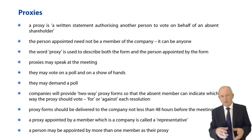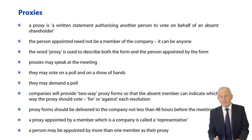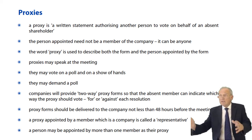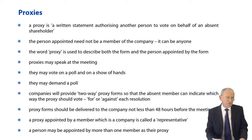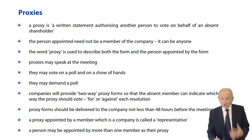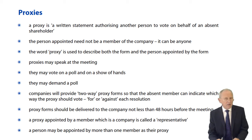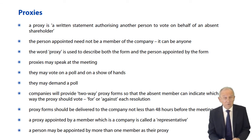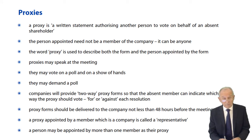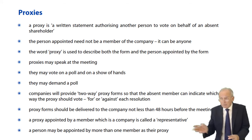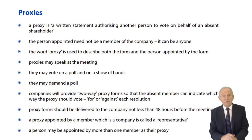Any member — possibly because they're unable to attend, perhaps they live in the Far East — may appoint anyone at all, not necessarily an existing member, to attend a general meeting on their behalf and vote as directed. If the member doesn't indicate which way they want to vote, the proxy person can vote whichever way they choose — which may be contrary to the member's wishes, but that's the member's fault for not specifying.